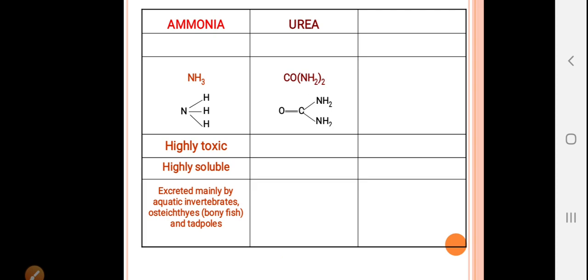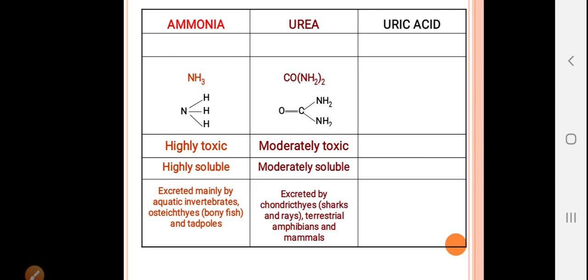In the case of ammonia, the formula is NH3, and it is highly toxic and highly soluble in water. So it is removed only by aquatic animals because they have a large amount of water. Examples are aquatic invertebrates, bony fishes, and tadpoles.